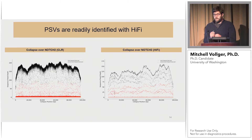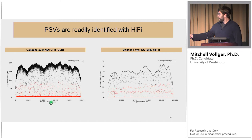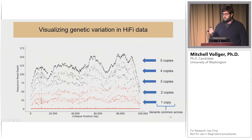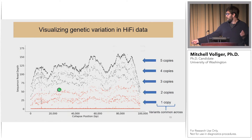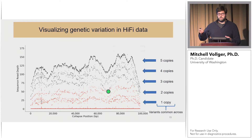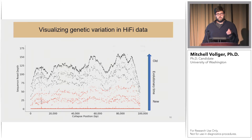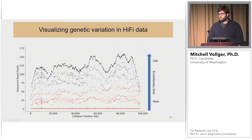One important highlight is how easy it is to see paralogous variation in HiFi data. On the left is a collapse of Notch2 in a CLR assembly; on the right is the same collapse with HiFi data aligned. In the HiFi data you can clearly see all five copies of the duplication — variants common to only one copy, to two, three, four, and five copies respectively. This can also be thought of as evolutionary time: low-frequency variants are newest while those shared across more copies are progressively older. We think this will be really exciting for resolving these duplications.